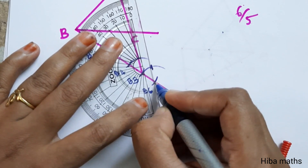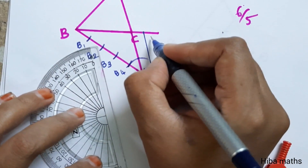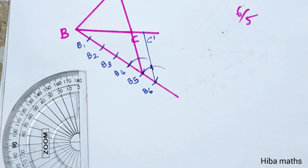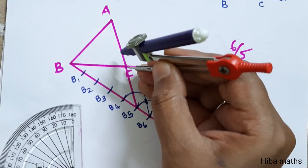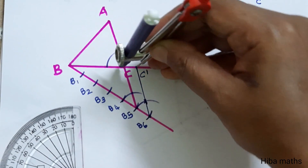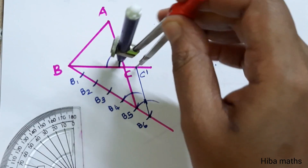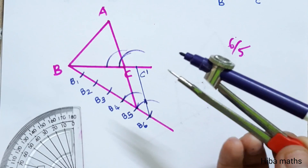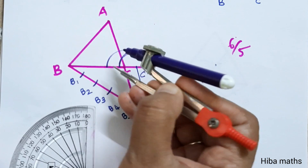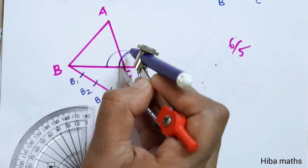We connect the two points and join to get C'. Now mark the angle, draw the arc for 1 cm, draw the arc, and draw the radius to C'. The angle is correct — the two angles match. This point is the same as this point.